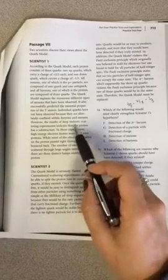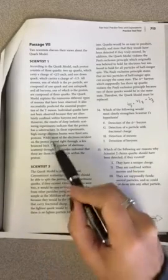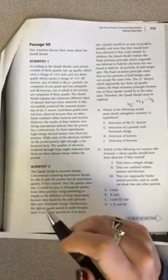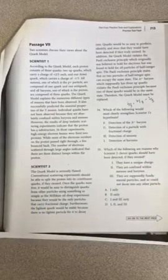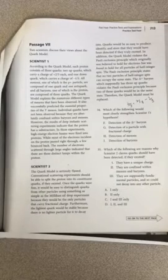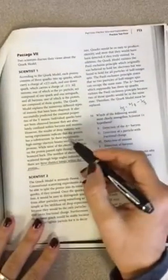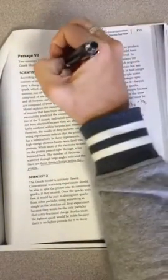absolutely confined within baryons and mesons. However, the results of the deep and elastic scattering experiments indicate that the proton has a substructure. In these experiments, high-energy electron beams were fired into protons, while most of the electrons incident on the proton passed right through a few bounce back. The number of electrons scattered through large angles indicated that there are three distinct lumps within the proton. So this is a whole lot of words. This passage is really just trying to confuse you.